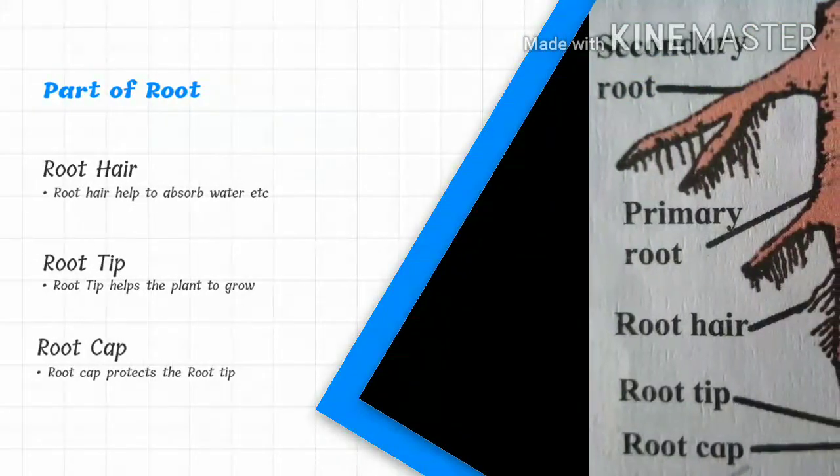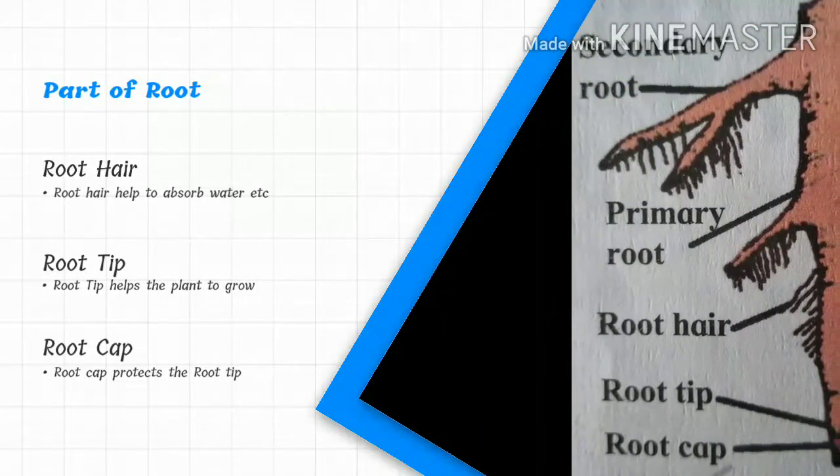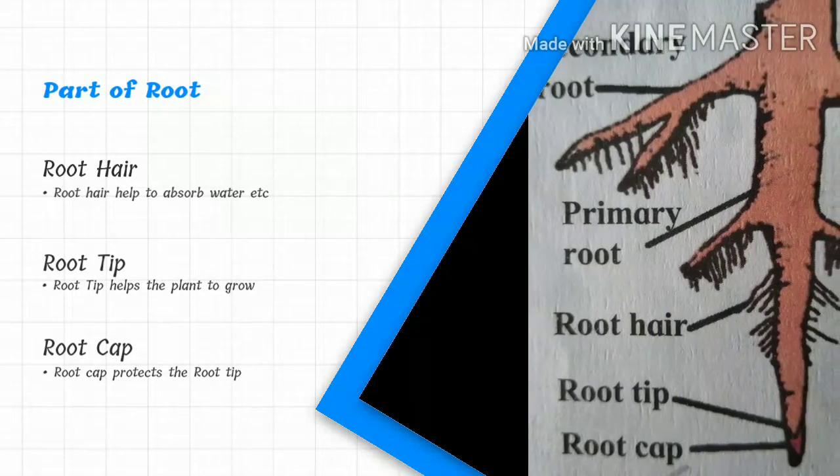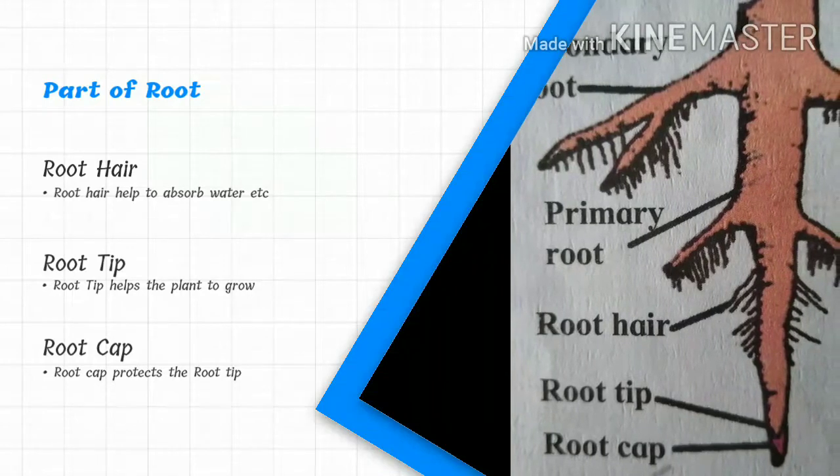Parts of the roots: Root hair helps to absorb water. Root tip helps the plant to grow. Root cap protects the root tip from injuries.